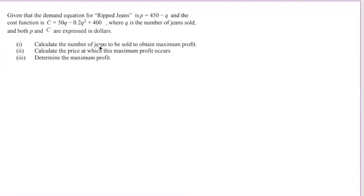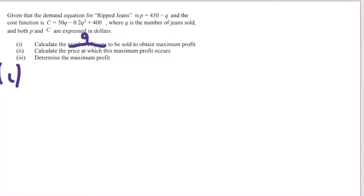The first part asks to calculate the number of jeans to be sold to obtain maximum profit. We weren't given the profit function, and Q — the number of jeans — is what we need to find for maximum profit. So we're going to find Q, but for part one we have to differentiate the profit function. Since we don't have the profit function, we need to build it using profit equals revenue minus total cost.